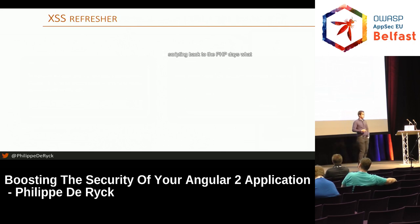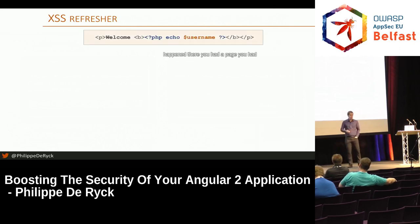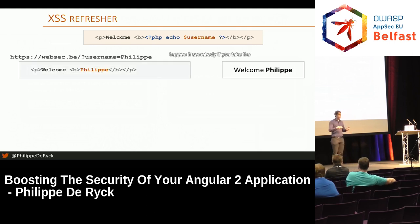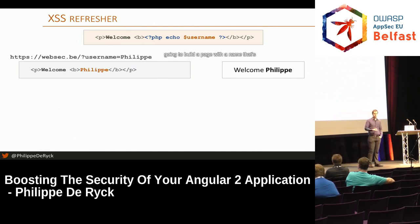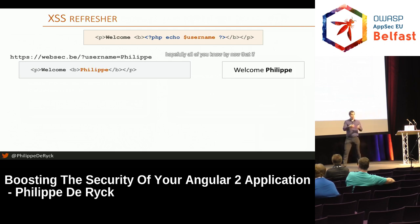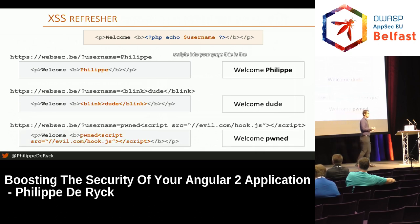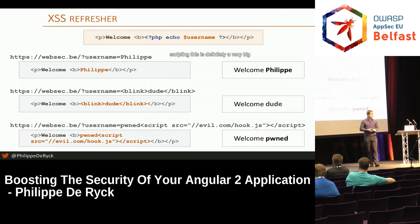Back to the PHP days. You had a page with some PHP code outputting a variable. If you take the variable from the URL — say, somebody gives you their name — you build a page with that name. But if somebody gives you a script tag instead, that's going to execute. If somebody gives you a remote script reference, you're going to load remote scripts into your page. This is the textbook definition of cross-site scripting.